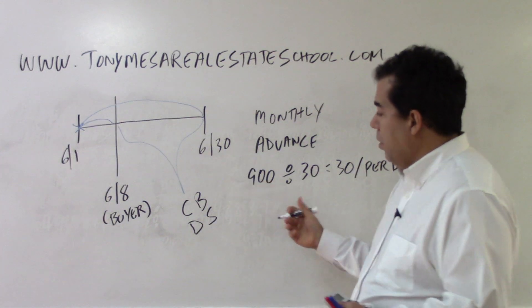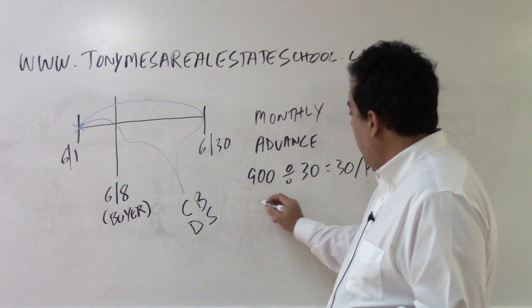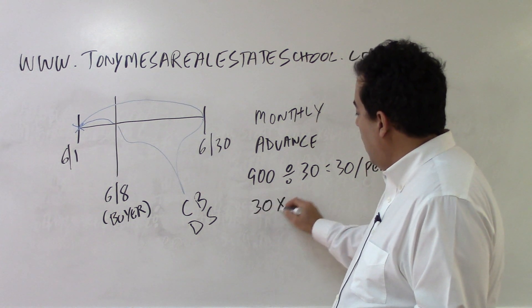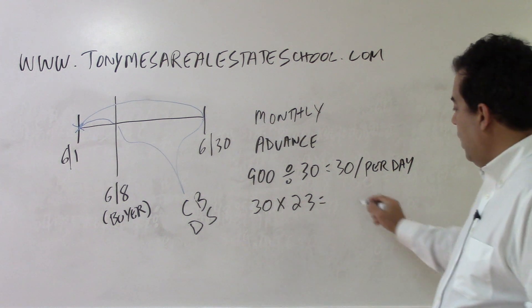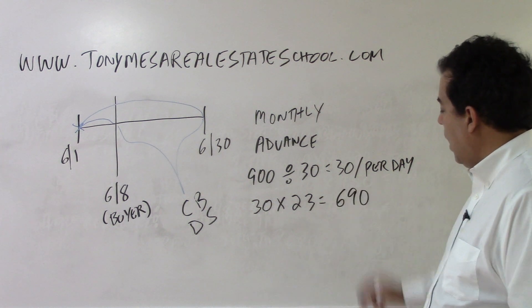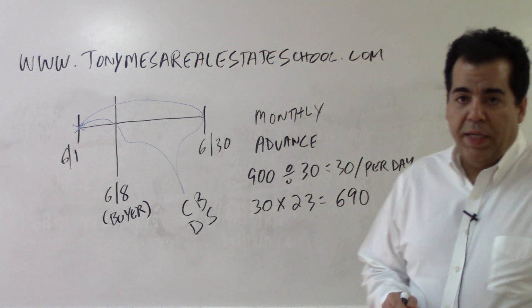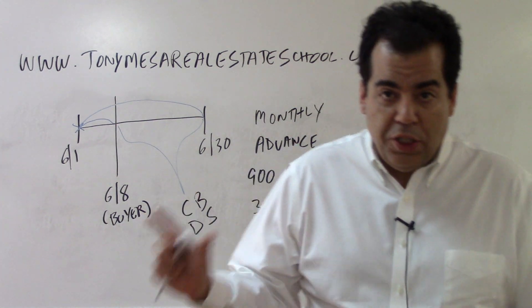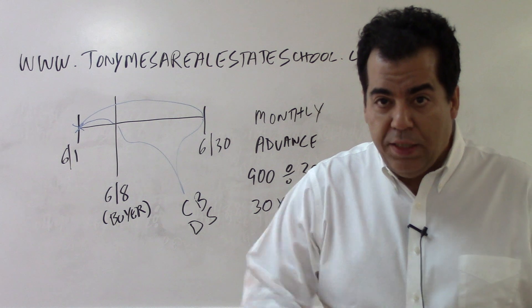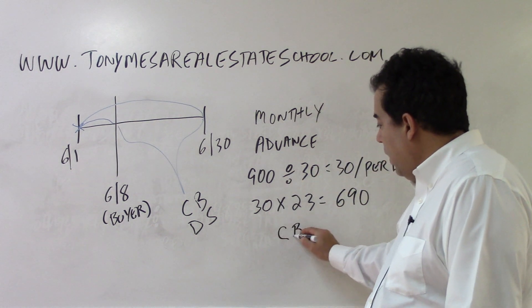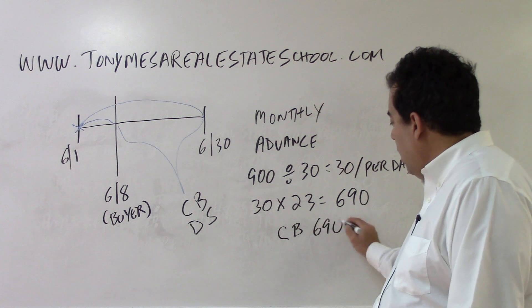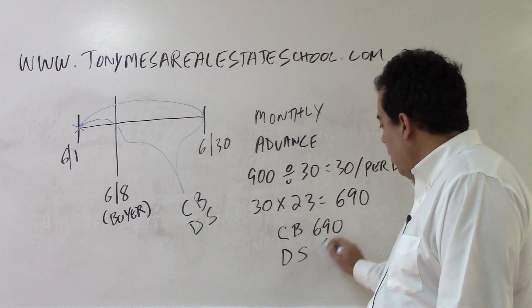So we have $30 per day times 23 days. $30 per day times 23 days gives us $690. With a proration, however much one side is credited, the other side is debited the same amount. So the correct answer here is you would credit the buyer $690, you would debit the seller the same $690.